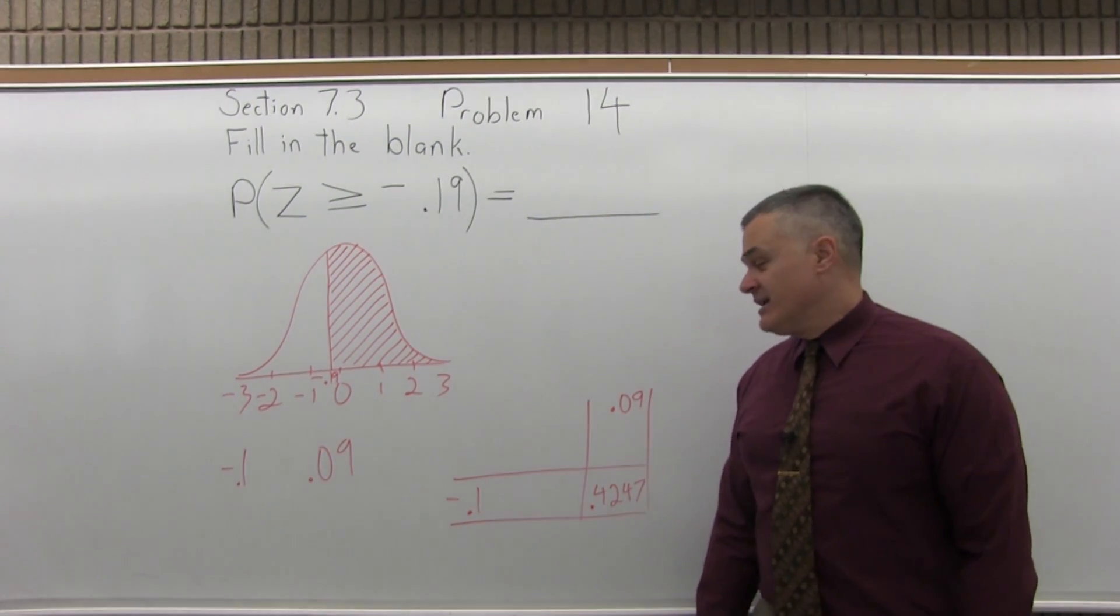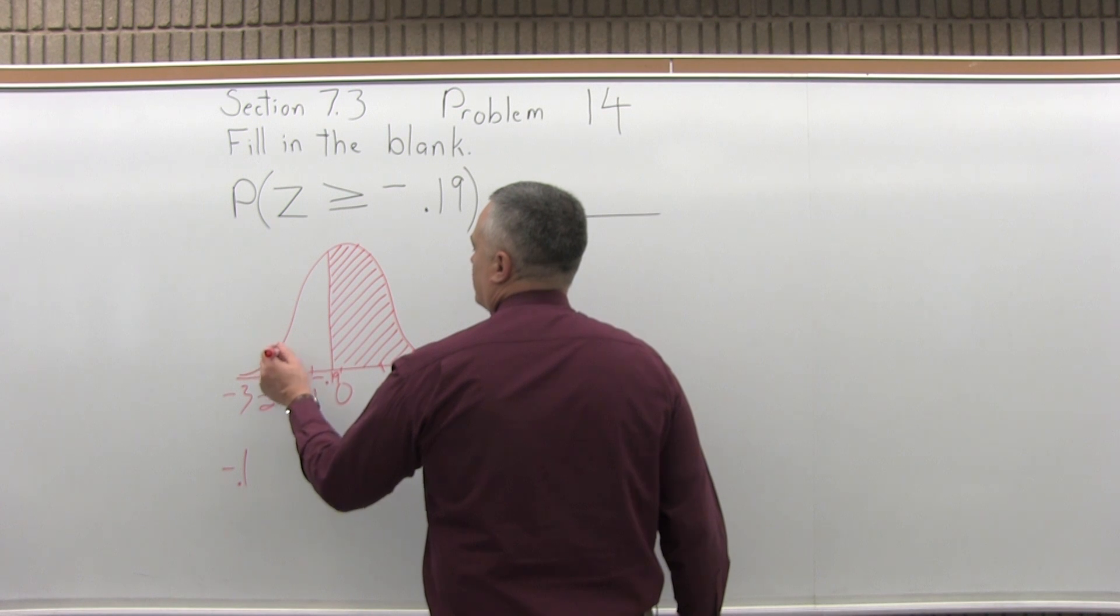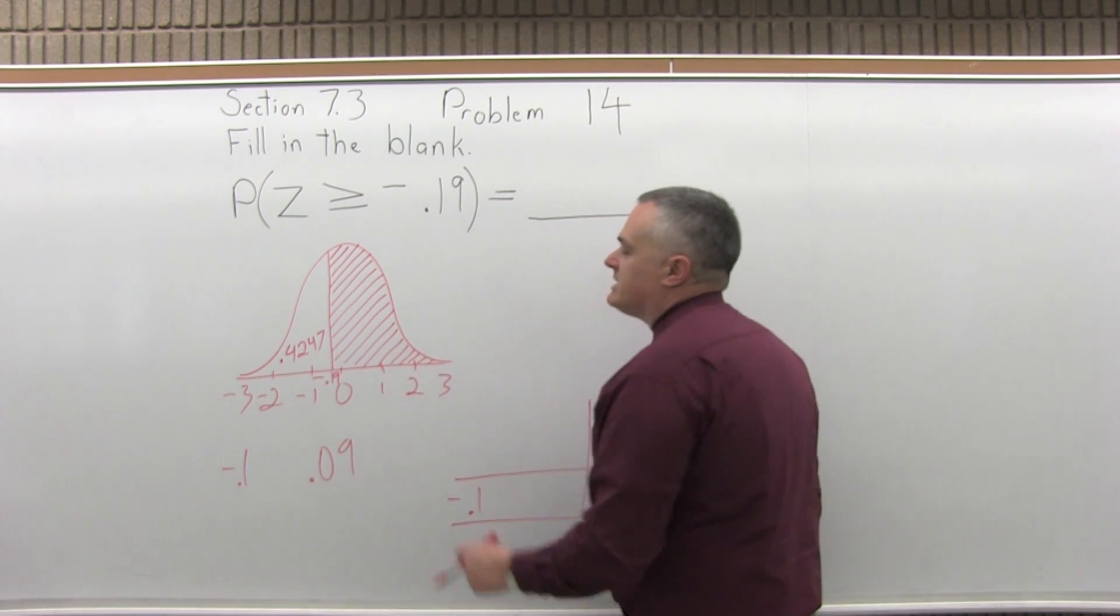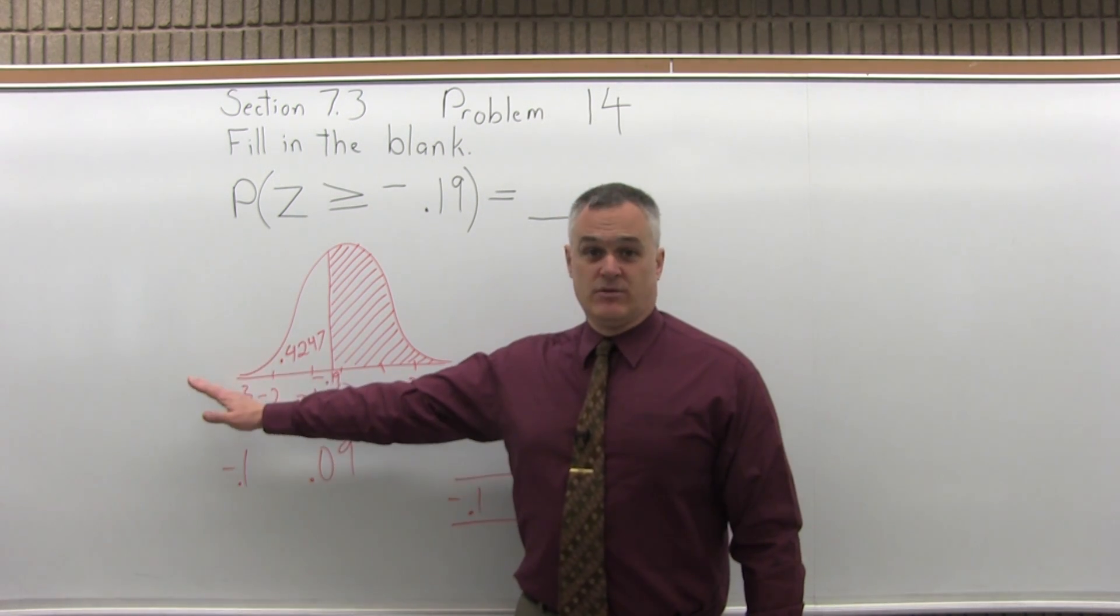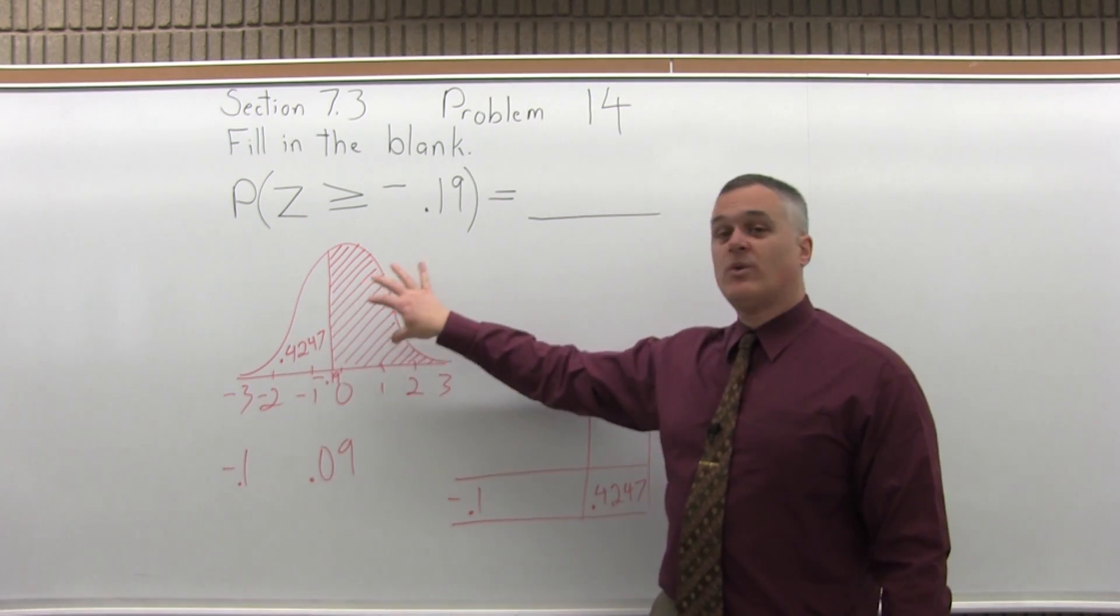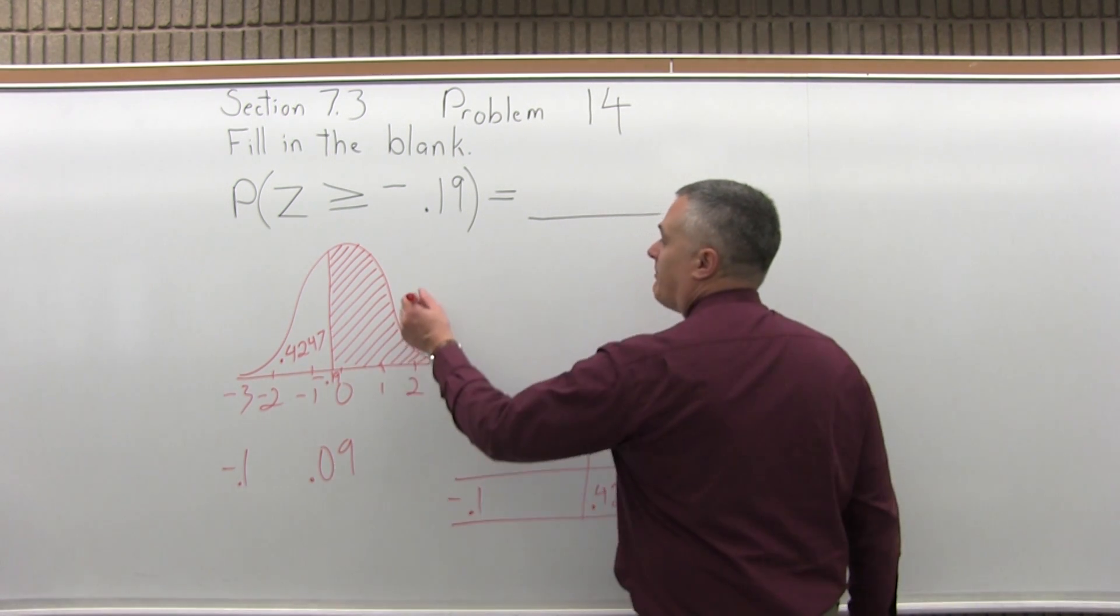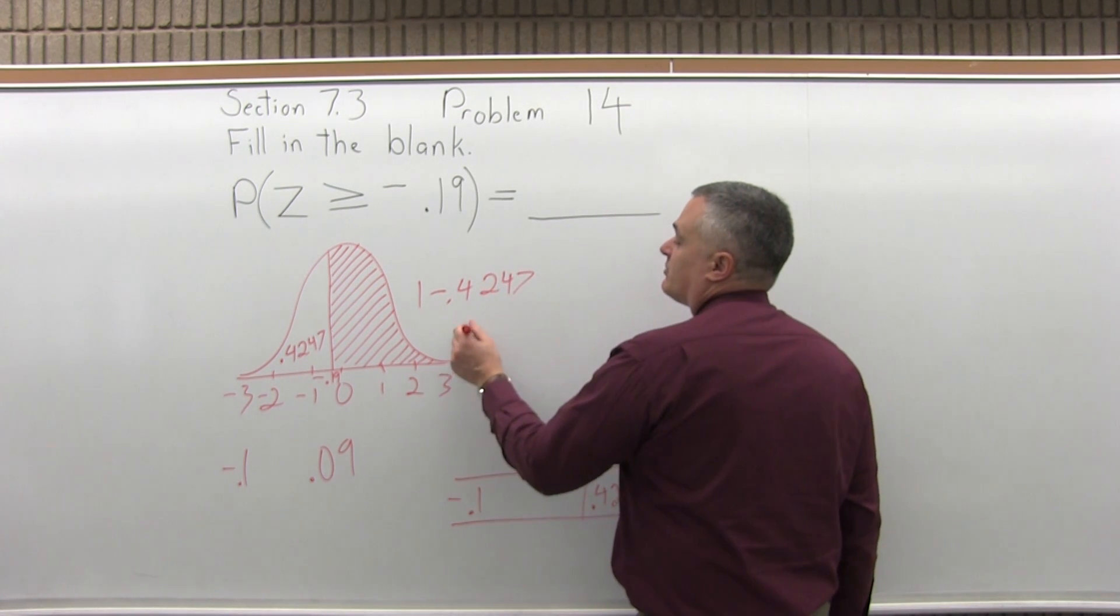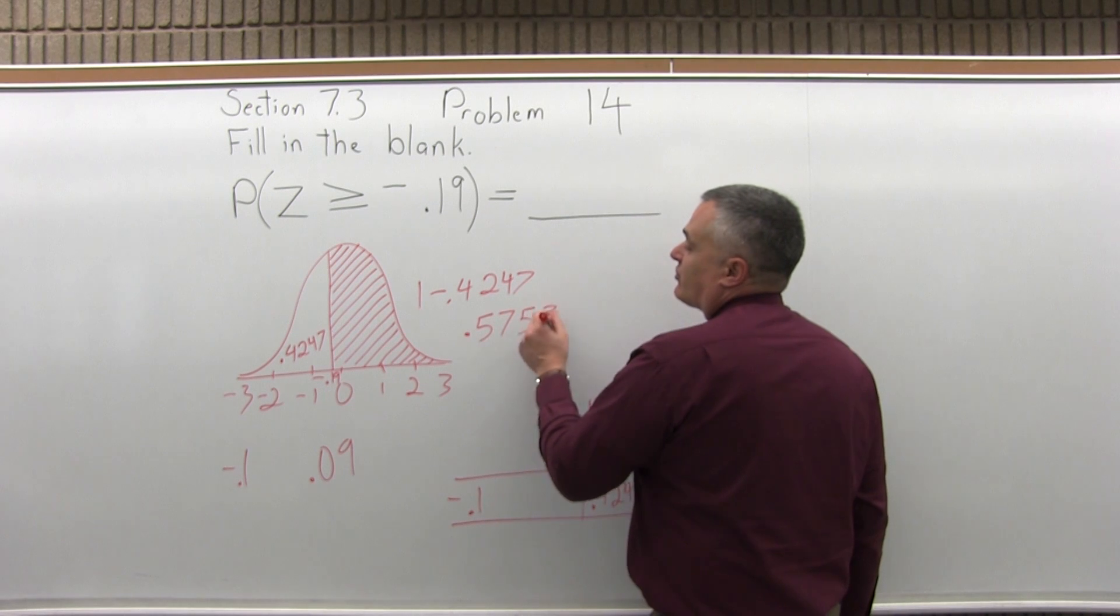Now .4247 is not the answer. .4247 is the blank area that I'm not interested in. The chart is only set up to tell you the area to the left of what you've looked up. So for this particular problem, I want what's on the other side, the right. So to find that, I have to do 1 minus the chart value, 1 minus .4247, which will be .5753.